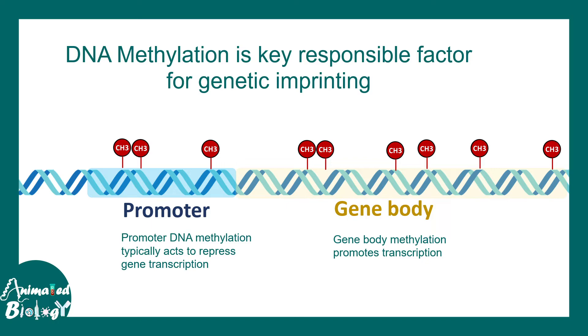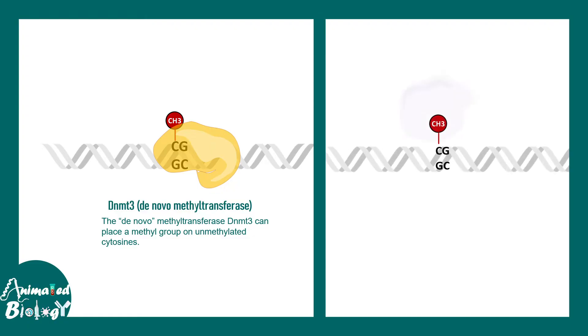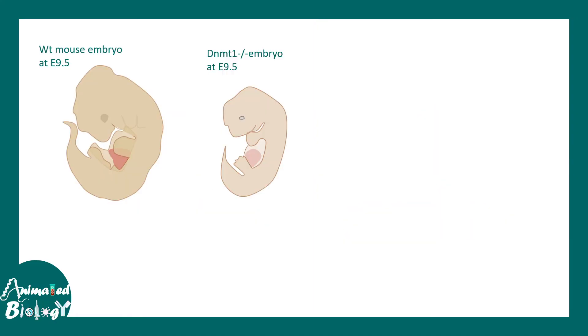Who writes this DNA methylation? There are several enzymes known as DNA methyltransferases, such as DNMT3. This particular enzyme is known as a de novo methyltransferase, meaning it can transfer a methyl group to an unmethylated CG. There are other methyltransferases known as perpetuating methyltransferases — they recognize a methylated C in one strand and methylate the corresponding C in the CpG of the other strand. These different methyltransferase enzymes ensure the methyl group can be transferred onto the DNA.